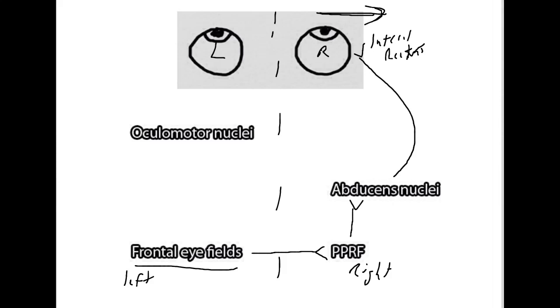So, that all makes sense. Now, how do we get the left eye to also look to the right or look in towards the nose? And that is accomplished via a connection from the abducens nuclei and the PPRF to the oculomotor nuclei. And that connection is the MLF, or the medial longitudinal fasciculus.